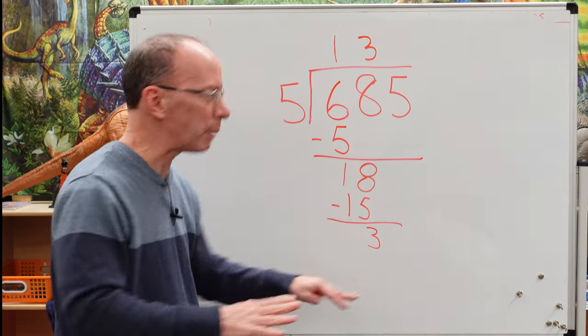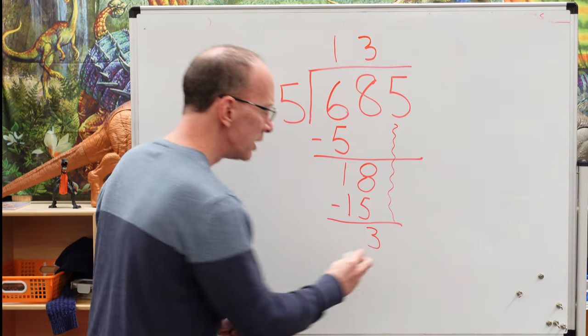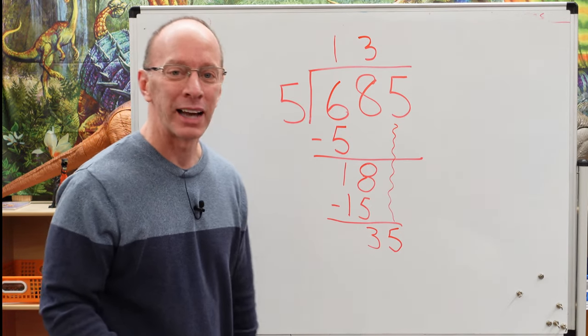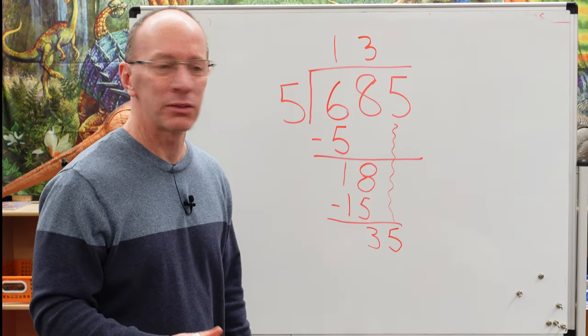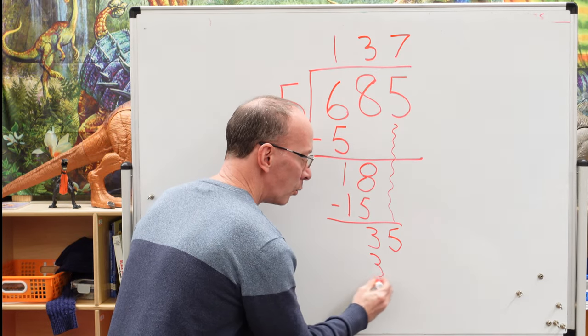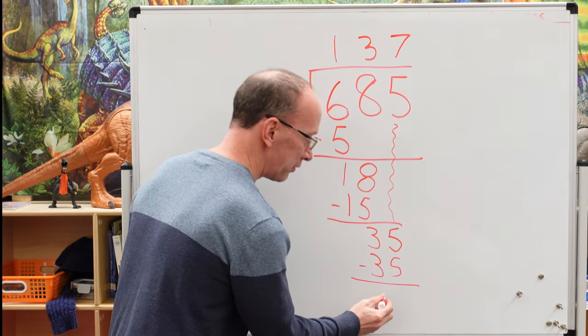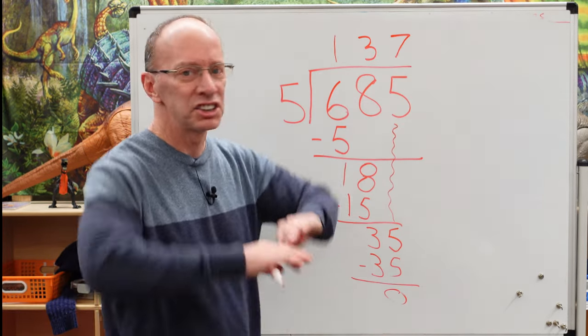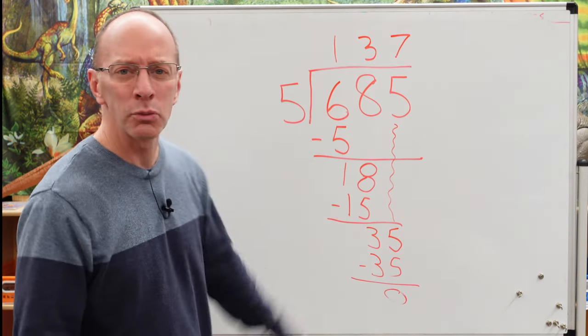Now we've got to take this number and drop it down. Push it down. You can add those cool sound effects if you want to. Now we've got to put 5 into 35. I love 5s. 5, 10, 15, 20, 25, 30, 35. 7. 5 times 7 equals 35. Are you seeing what I'm seeing? 7 times 5 is 35. We don't have a remainder. Awesome. 35 minus 35, 0. Nothing. When you've got a remainder of 0, you don't put it there. Just leave it alone. 685 divided by 5 equals 137.